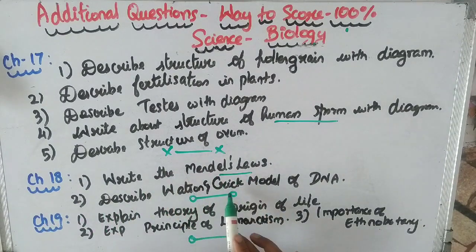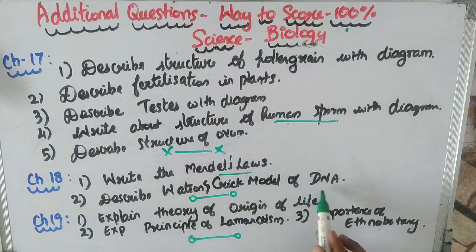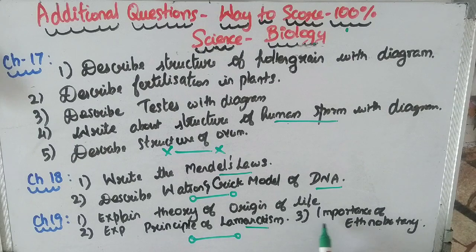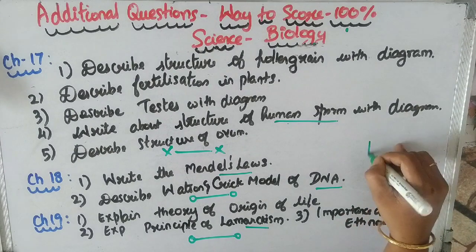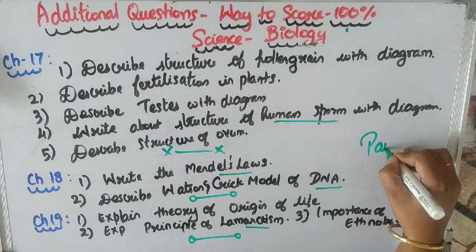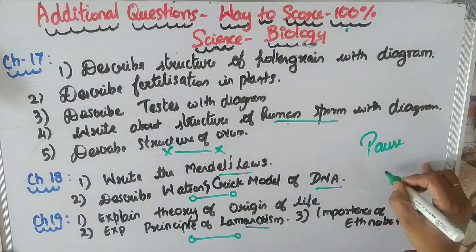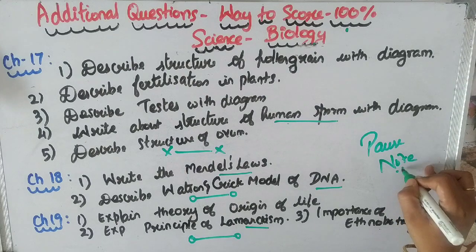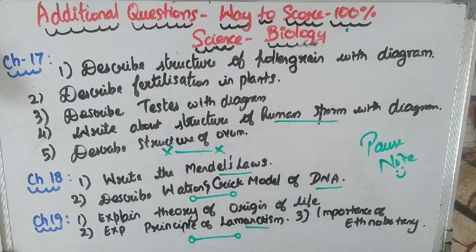Question 5: Describe the structure of ovum. Chapter 18: Question 1: Write about Mendel's law. Question 2: Write about the Watson-Crick model of DNA. Chapter 19: Question 1: Explain the theory of origin of life. Question 2: Explain the principle of Lamarckism. Question 3: Write about the importance of ethnobotany.